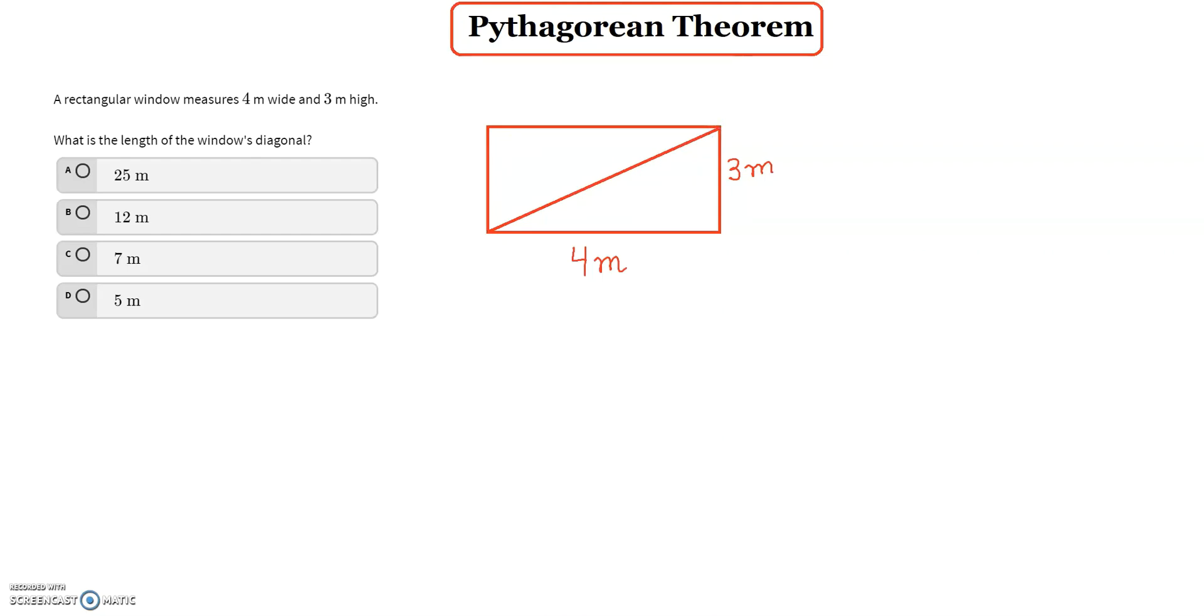And we know that all the angles in a rectangle is equal to 90 degrees. So all of them are 90 degrees. Now we are solving for the diagonal which is technically c.